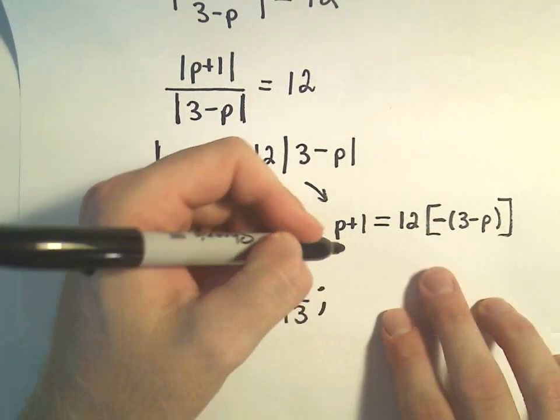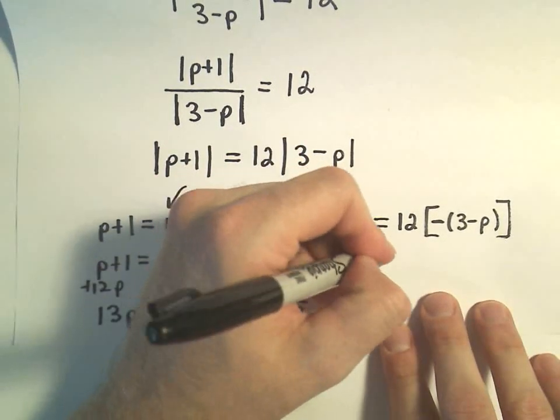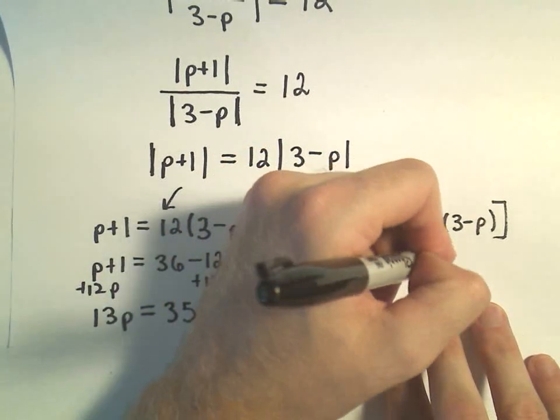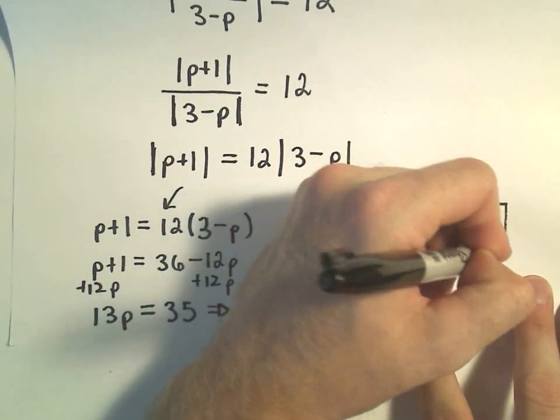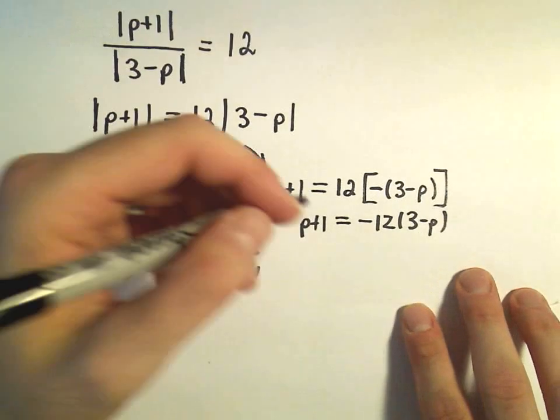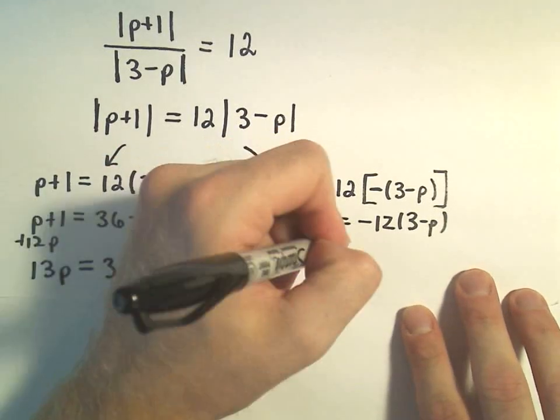And the other solution here, this is p plus 1. We could write that as negative 12 times 3 minus p. So now if I distribute things out, we have p plus 1.